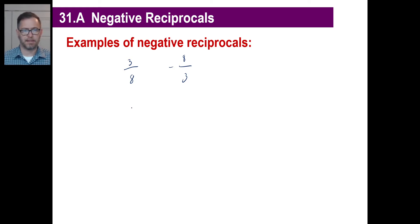If you had something like negative 5 over 7, the negative reciprocal of that would be not negative 7 over 5, but just 7 over 5 because you were changing this sign from negative to positive, and positive to negative.